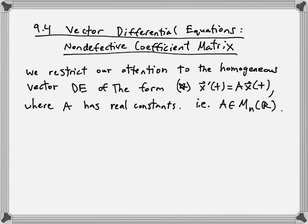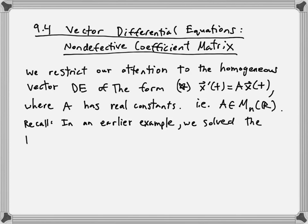We already solved a problem like this using an elimination method in section 9.1. Let me cite that example to recall what the solutions look like. We solved that differential system, which in vector form is x' = [[1, 2],[2, -2]] x.